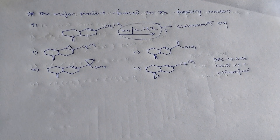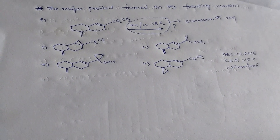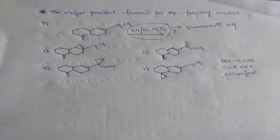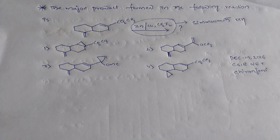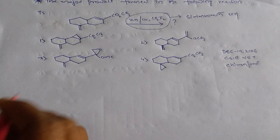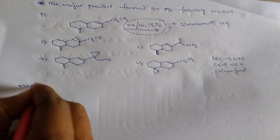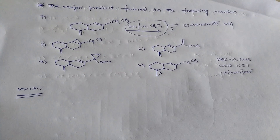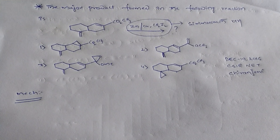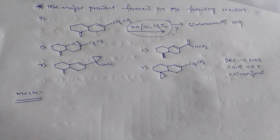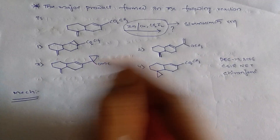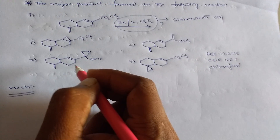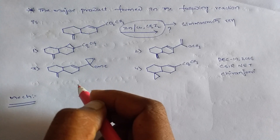So what is the Simmons-Smith reaction? The Simmons-Smith reaction involves a mechanism in which an alkene and the carbene of a zinc complex combine to form a cyclopropane ring.